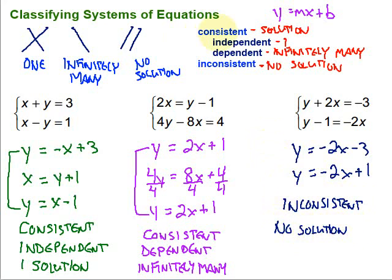To summarize classifying systems of linear equations: there are three things that can happen — lines cross at one spot giving one solution, they're the same line giving infinitely many solutions, or they're parallel giving no solution. The vocabulary: consistent means there are solutions; if consistent, independent means one solution and dependent means infinitely many. Inconsistent means no solution — that's when we have parallel lines. Hope this video was helpful. Keep working hard on your math — you can do it!